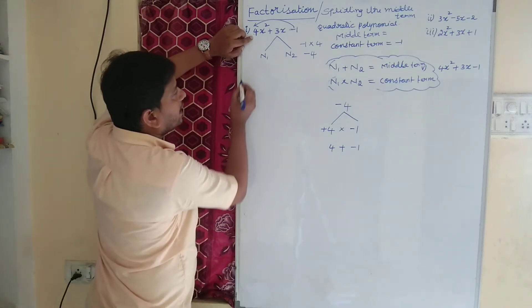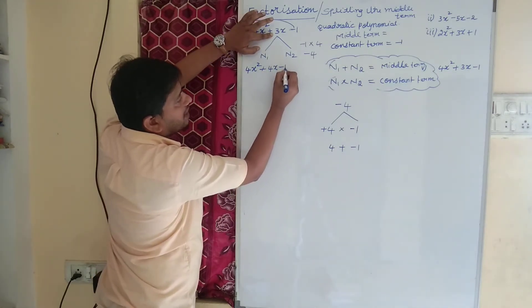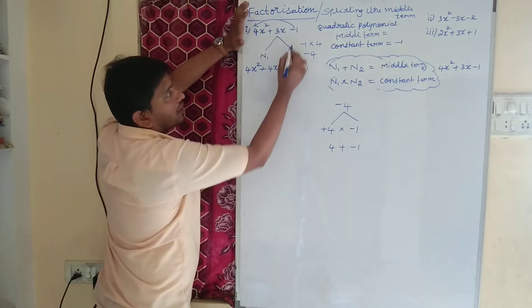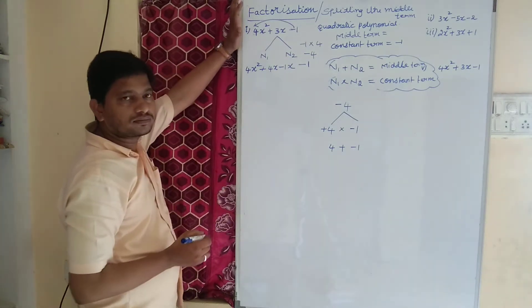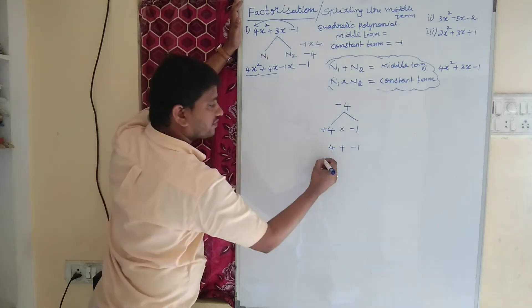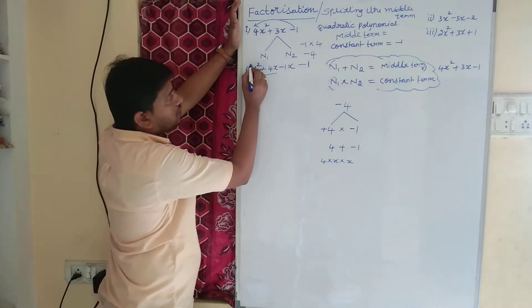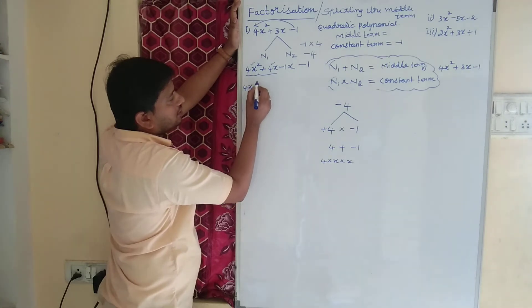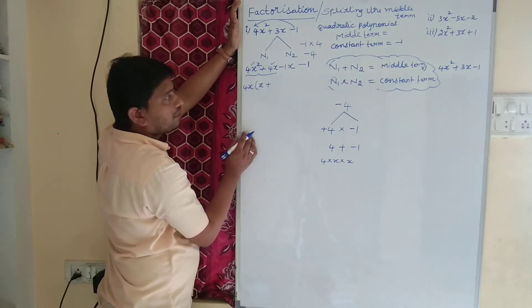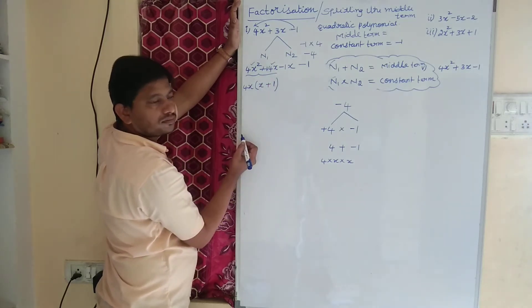Now I can write 4x square, and 3x I can write as 4x minus 1x — since 4 minus 1 equals 3x. The constant term is minus 1. Now, 4x square means 4 into x into x. From the first two terms I can take 4x as common: 4x into x gives 4x square, and there is plus 1 remaining.